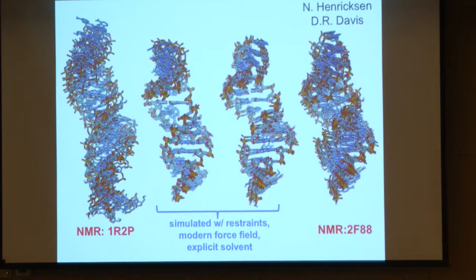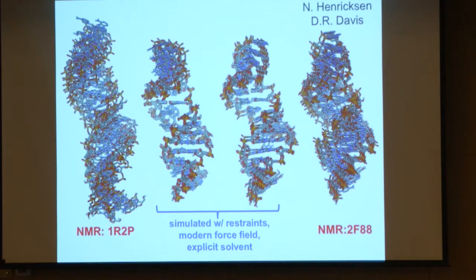We refined a lot of NMR structures over this time frame. One example involved two NMR structures of a very similar RNA duplex with a bulge in the middle — the bulge was different in the two structures. When we ran the one on the far left it fell apart in simulation on Blue Waters, so we re-refined the structures using modern simulation protocols, all the NMR data, water, and salt. When we did that for the two different structures we got a very similar structure for both systems that better fits the NMR data than the originally published structures.